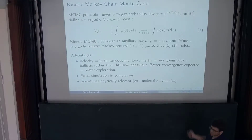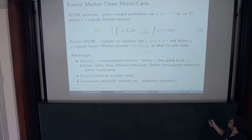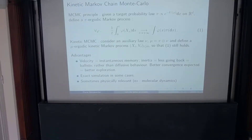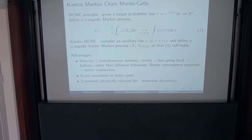The motivation is that you have some chemists, physicists, or statisticians who come to you and say they have some probability measure and want to compute expectations with respect to this probability measure. Unfortunately, it's large dimensional, and they can only compute the potential — the probability law is proportional to some exponential minus U, so they can compute U, but have no idea of the normalizing constant. What you can typically do in that case is define a Markov process X which is ergodic with respect to your measure, so that an average over time along a trajectory converges in large time toward the expectation you want to compute.